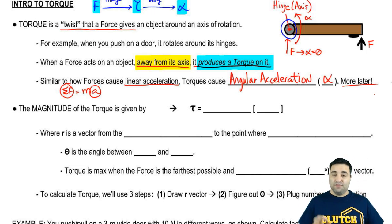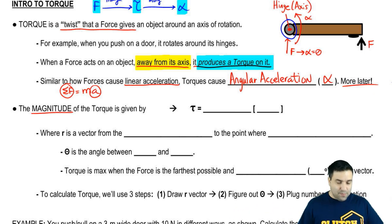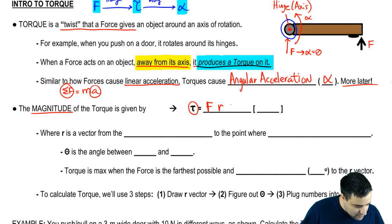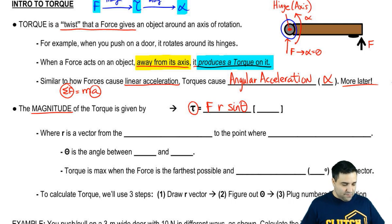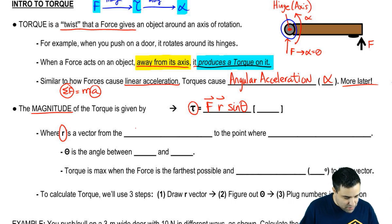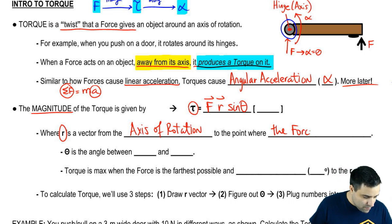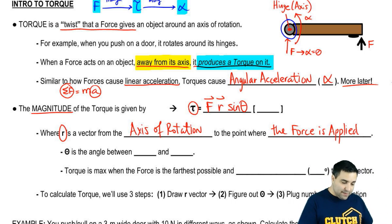Another difference between torque and force is that force is a straightforward number — if you push with 10 Newtons, that's it. But torque depends on how hard you push, how far, and some other factors. So we have an equation for torque: torque equals FR sine of theta. F is the force vector, and R is a vector from the axis of rotation to the point where the force is applied.